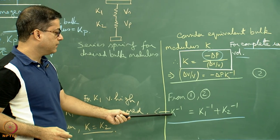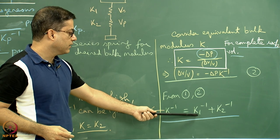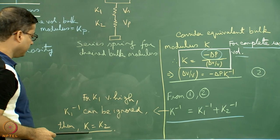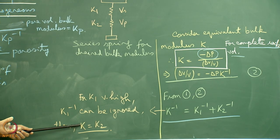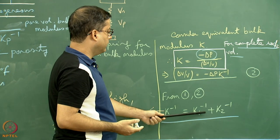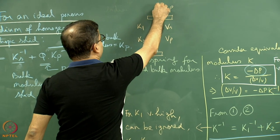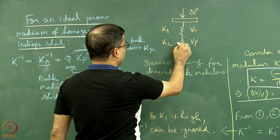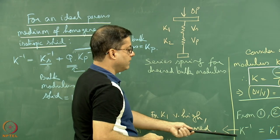From K inverse equals K1 inverse plus K2 inverse: if K1 is very high — which happens for the solid materials in rocks — then K1 inverse becomes a very small number, and K inverse approaches K2 inverse, meaning K equals K2. The bulk modulus of the entire material becomes equal to that of the pore space. This relationship can be represented mechanically as a series spring arrangement for the drained bulk modulus, with two springs representing Vs and Vp with stiffnesses K1 and K2.